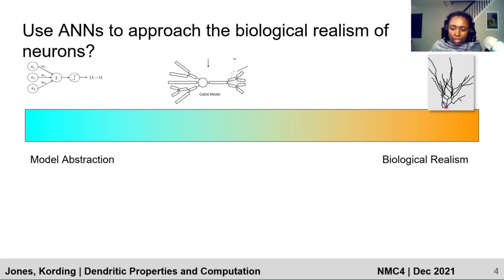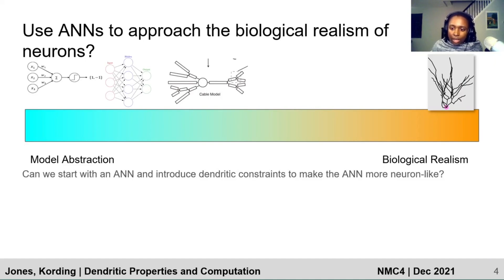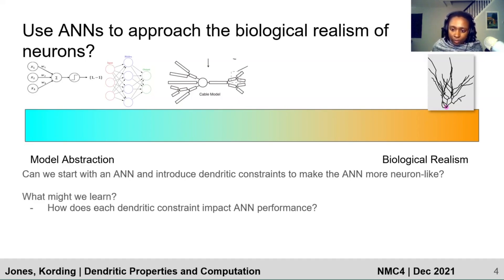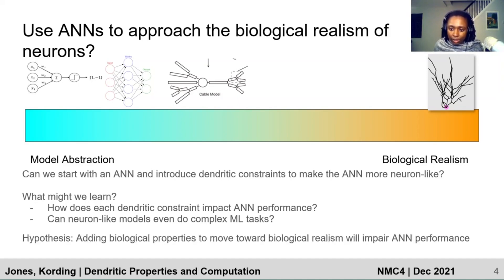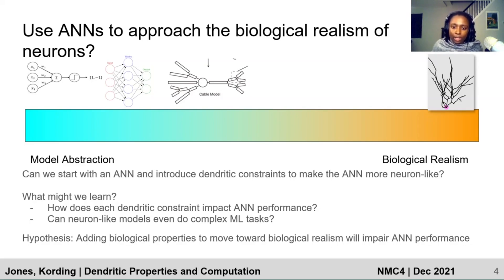What I want to do is to introduce ANNs to this neuron modeling spectrum by asking if we can start with an ANN and introduce dendritic constraints to make the ANN more neuron-like. What we might learn is how each of the qualitative dendritic constraints impacts ANN performance, and if the resultant neuron-like models can even do complex ML tasks. If we assume that neurons are quite limited in their computational capabilities because of their biological qualities, we might hypothesize that adding biological properties to move toward biological realism will impair ANN performance.